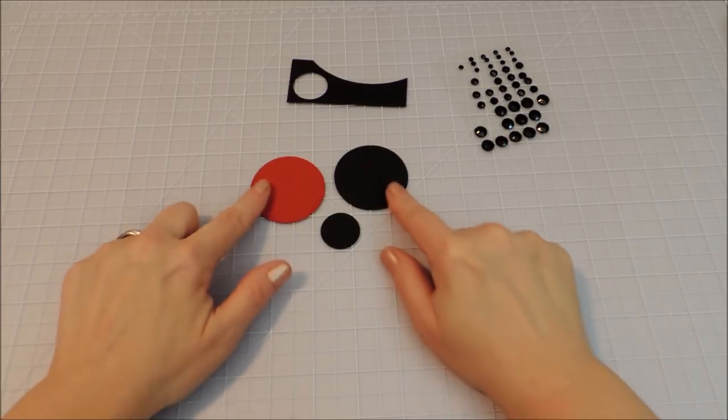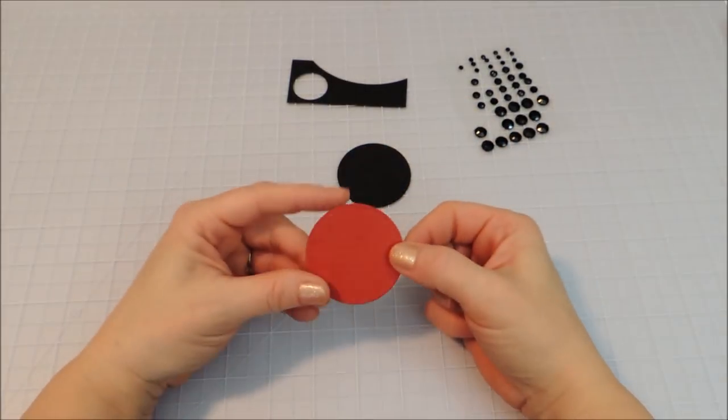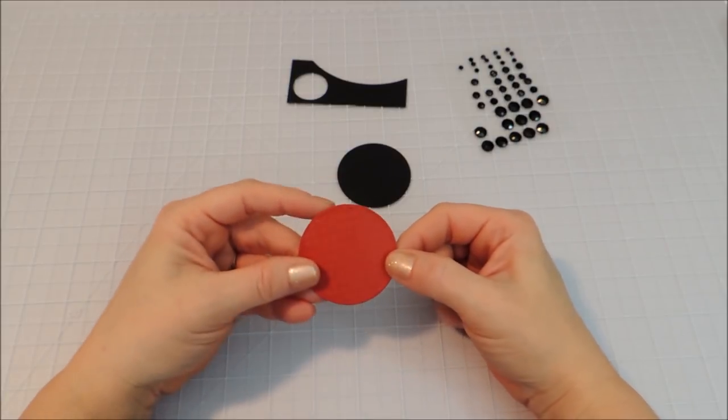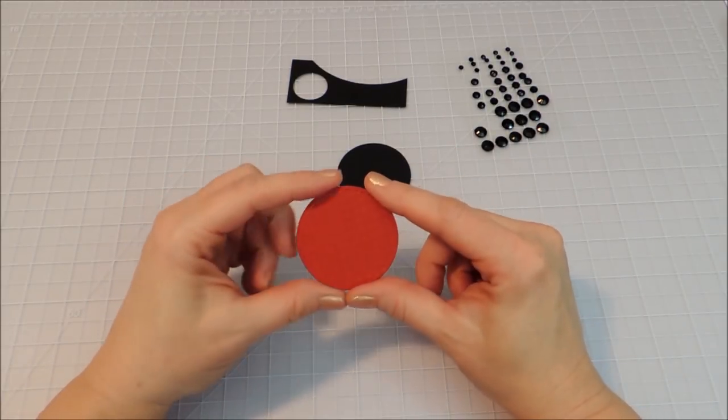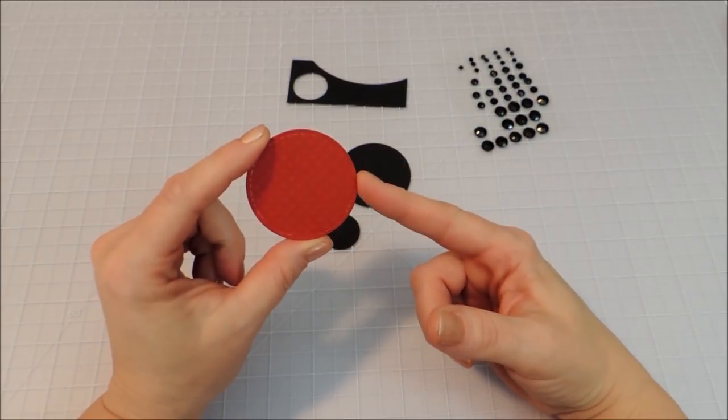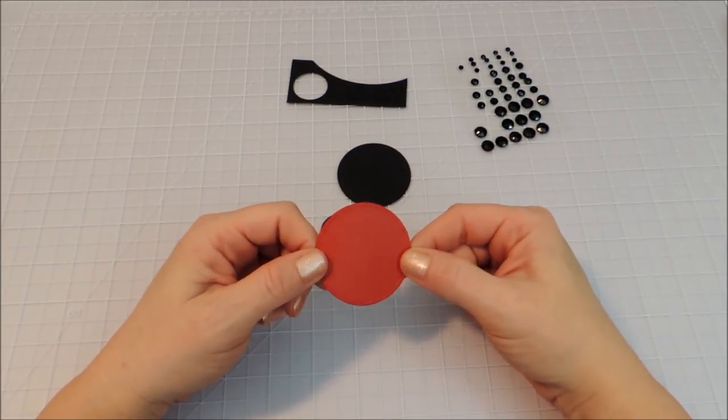So what I've got here is some circles that I cut out with just some unbranded dies that I got on eBay, and I will put the links to those in the description for you, but you can use the dies or punches or whatever you have.